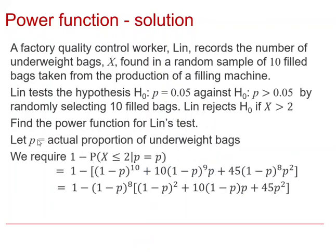So we need to introduce another parameter where p is the actual true proportion of underweight bags, and if we're going to accept the null hypothesis, we want the number of underweight bags to be less than or equal to 2 when p takes a particular value. If we just use the binomial probability expression for obtaining 0, 1, and 2, hopefully you can see that this is the algebraic expression for the probability of getting a Type II error, and we subtract that from 1 in order to obtain the power of the test.